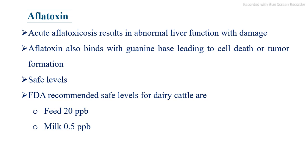Acute aflatoxicosis results in abnormal liver function with damage. Aflatoxin also binds with the guanine base, leading to cell death or tumor formation. FDA-recommended safe levels for dairy cattle are: feed — 20 ppb; milk — 0.5 ppb.